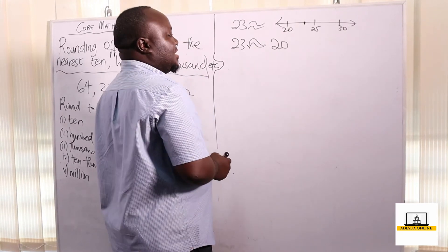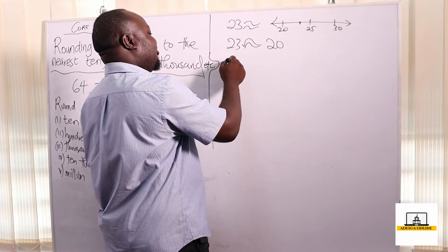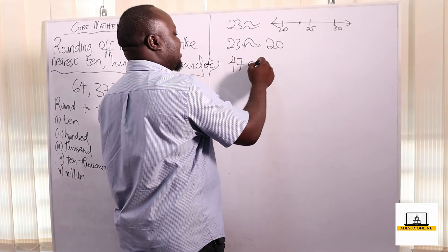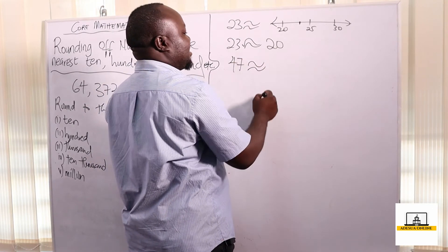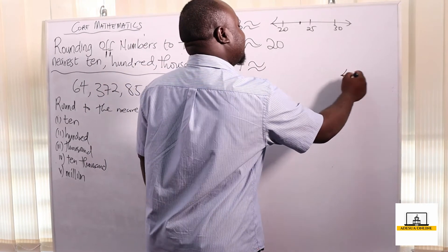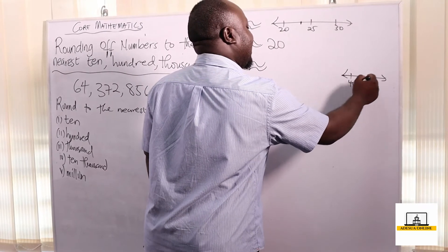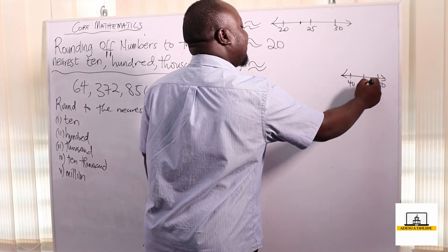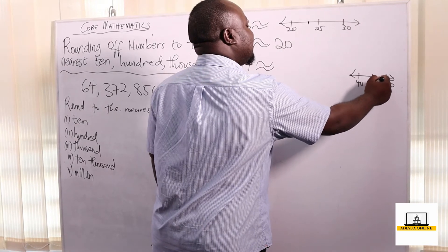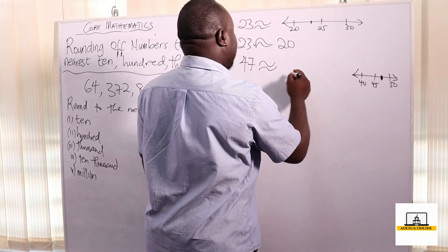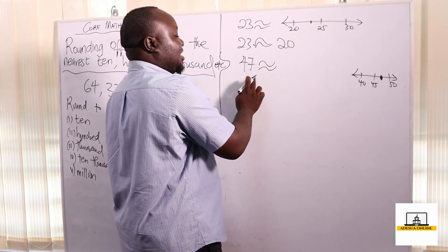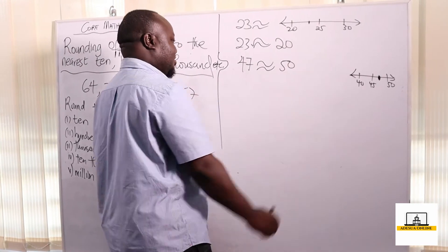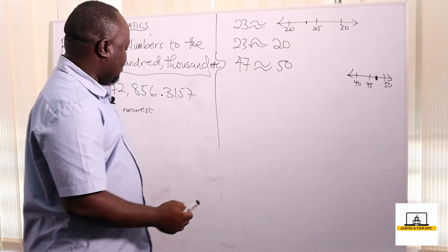The same way, if I have forty-seven and I want to approximate forty-seven to the nearest ten: forty-seven is between forty and fifty, and the middle is forty-five. So forty-seven is above forty-five, which is closer to fifty. Therefore, forty-seven to the nearest ten becomes fifty.